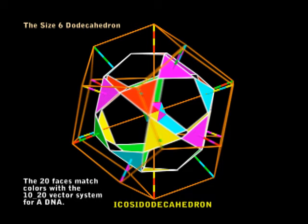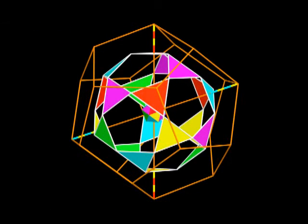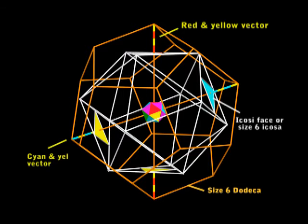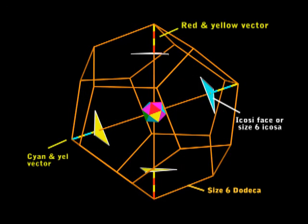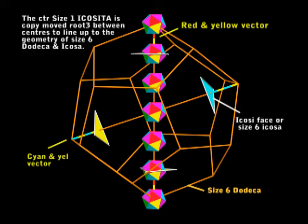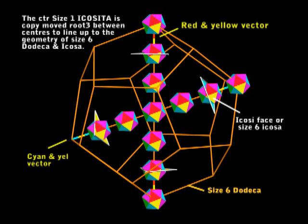Let's take a look at this dodecahedron. We'll only use the red and yellow and cyan and yellow vectors. We'll take all the triangles away except the 4 triangles for them vectors. Now I'm going to make copies of the icosita in the centre and move it up root 3 times 100. The 3rd icosita centres on the top triangular face. When we bring in the 4th icosita, she centres perfectly on the vertex of the size 6 dodeca. When we make 3 copies going down, it does the same. Please note that these icositas are moved along their face centre axis and they do not go between the vertex as centre axis, as on BDNA.